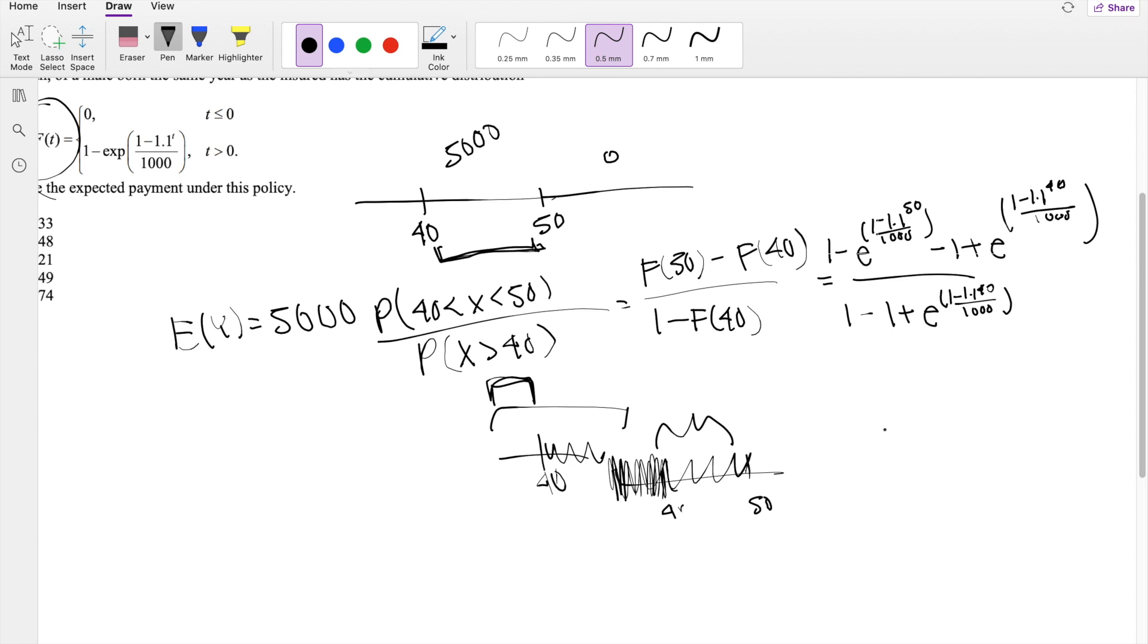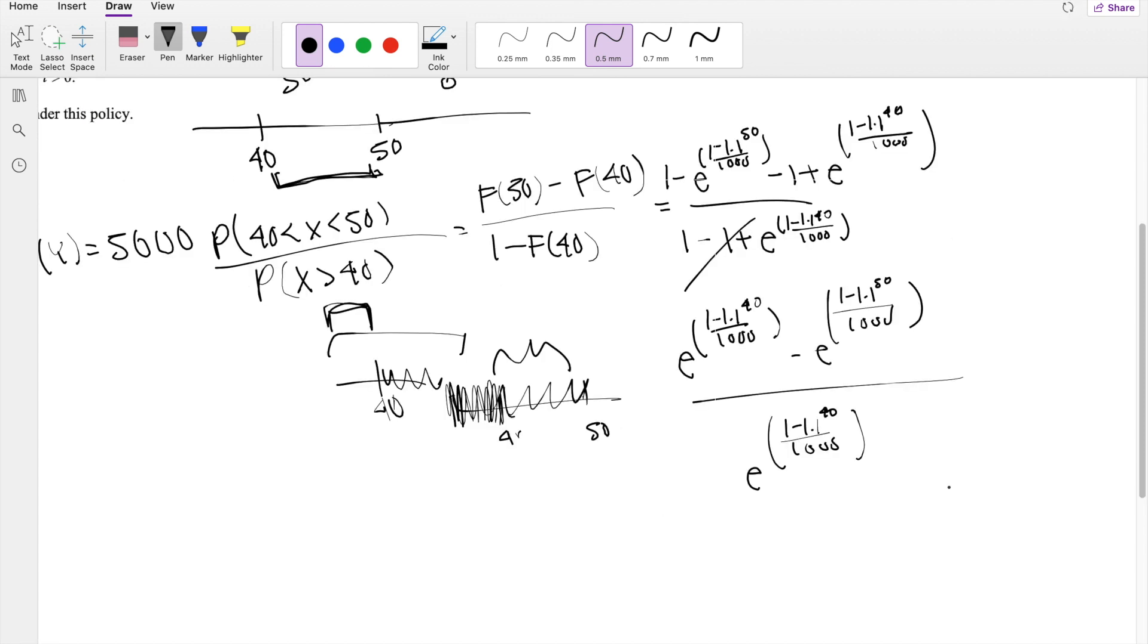But we can simplify it before we plug it into the calculator. We can say this is equal to E to the 1 minus 1.1 to the 40 divided by 1,000 minus E to the 1 minus 1.1 to the 50 divided by 1,000 divided by. This cancels out. So you get E to the 1 minus 1.1 to the 40th power divided by 1,000.